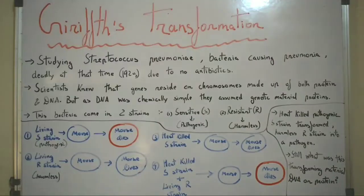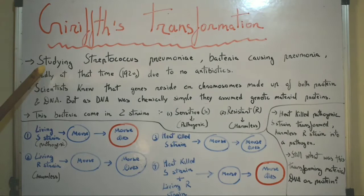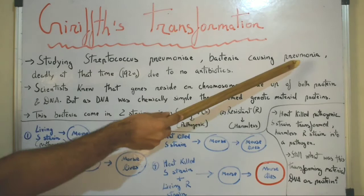Today we are going to talk about Griffith's transformation experiment. Fred Griffith was studying Streptococcus pneumoniae, a bacteria which causes pneumonia. The disease pneumonia was deadly at that time in the 1920s due to no antibiotics.